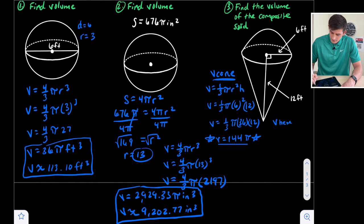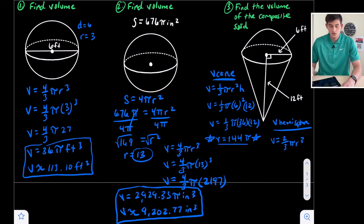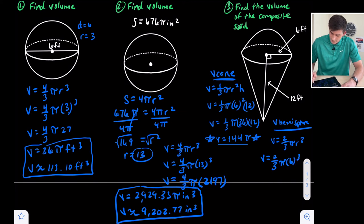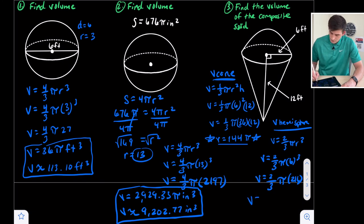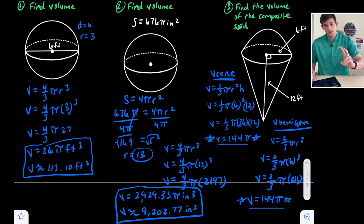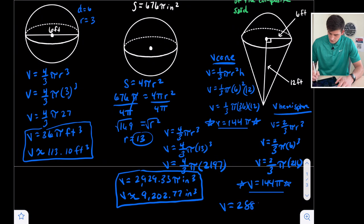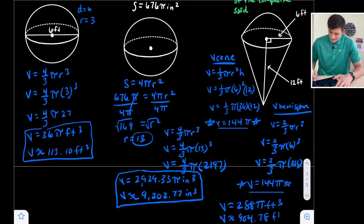Now let's find the volume of the hemisphere. Volume equals two thirds pi r cubed, with radius six. Six cubed is 216, so we have two thirds pi times 216. We do 216 times two and divide by three, giving us a volume of 144 pi. Both volumes happen to be exactly the same, so we add 144 pi plus 144 pi to get a composite volume of 288 pi cubic feet. Multiplying 288 pi in our calculator gives us a decimal approximation of 904.78 cubic feet.